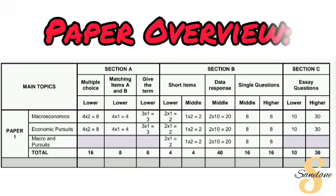First, we're looking at the total overview of what to expect from your question paper, starting with the main topics in our first column. The main topics are macroeconomics and economic pursuits, and there are also mixed questions. You're not going to have any mixed questions in Section A, and in Section B they are shaded with purple. In Section A you're going to have three types of questions. The multiple choice questions — for macroeconomics and economic pursuits you're going to get four questions each worth two marks, totalling eight marks each, and they are all compulsory. Then matching columns — four questions again, but worth one mark each.